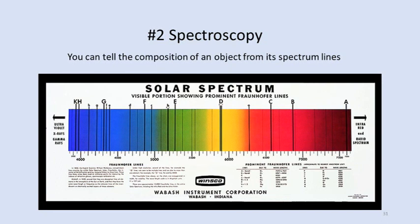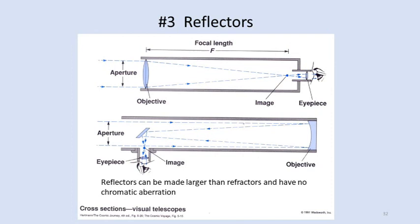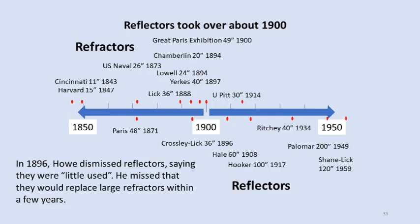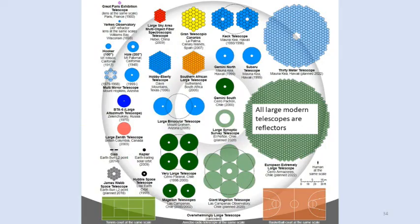Refractors worked great for visual work, but reflectors worked better for photography, especially at that time, and can be made much larger than refractors. Just as his telescope was finished in 1894, reflectors started to take over. And of course, all large modern telescopes are reflectors.